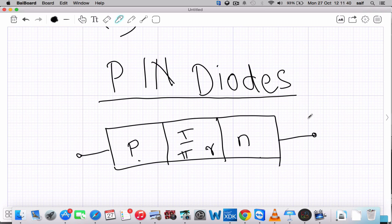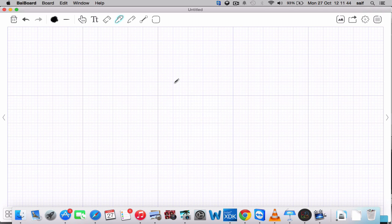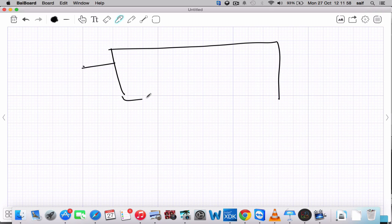Now we will come to the theory. Now we will draw once again. So why we will use PIN diode? Because it has highly improved switching time in comparison to the PN diode.